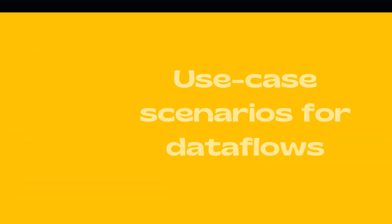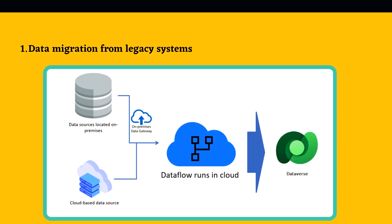Now let's discuss some use case scenarios for data flows. The first is data migration from legacy systems. In this scenario, an organization decides to use Power Apps for a new user interface instead of their legacy on-premise system. Power Apps, Power Automate, and AI Builder all use Dataverse as the primary data storage. The current data in the existing on-premise system can be migrated into Dataverse using a data flow, and then these products can use that data.